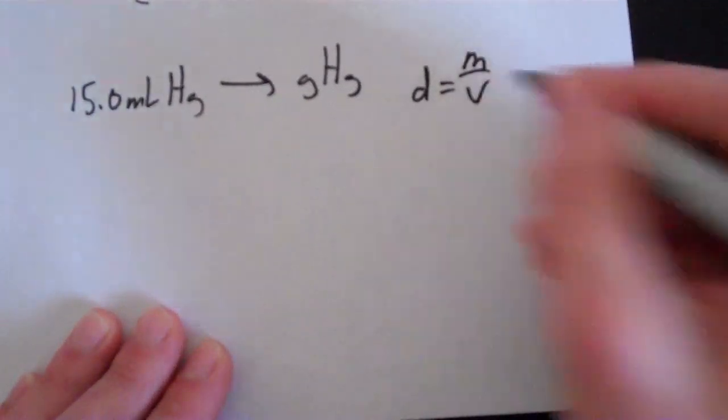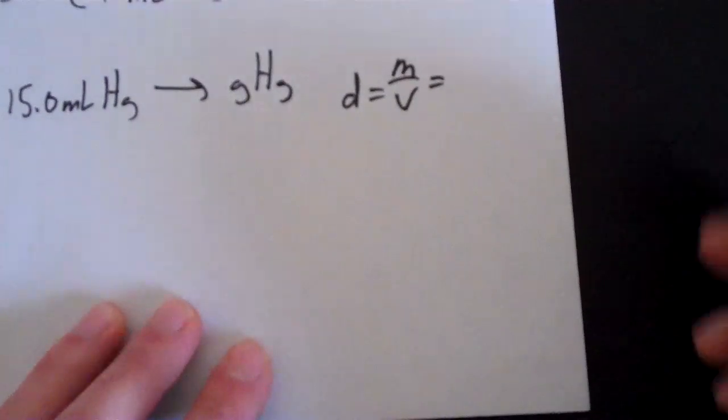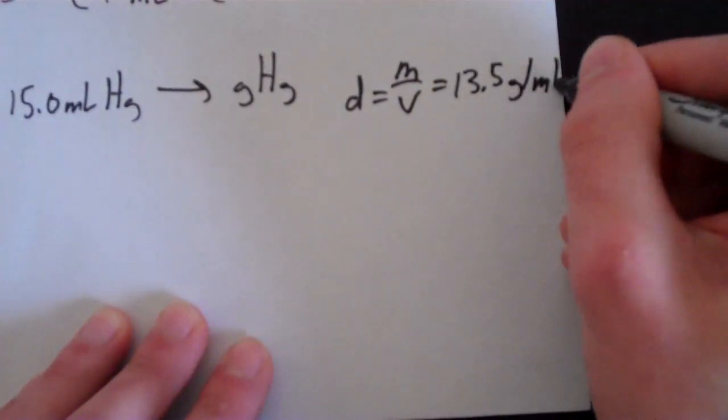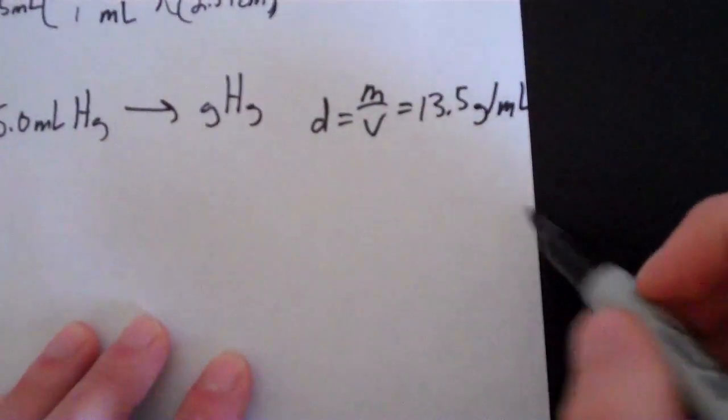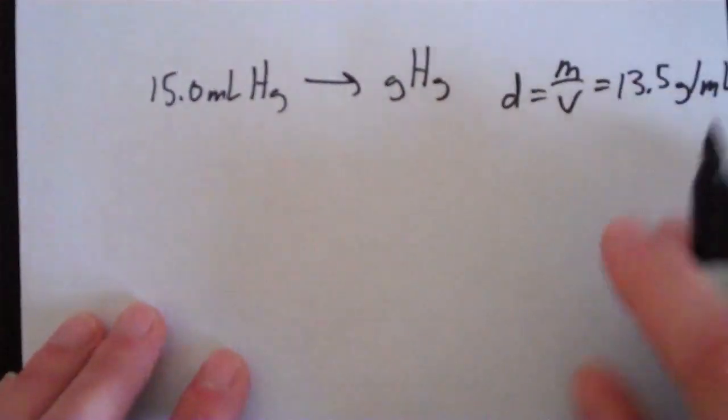So that means if I have 1 milliliter of this stuff, that milliliter is going to weigh 13.5 grams. So we start out with our value that's given, our given unit, 15.0 milliliters of mercury.